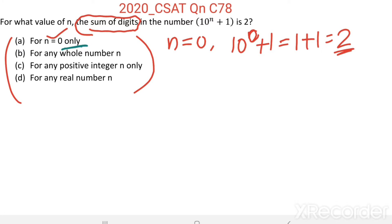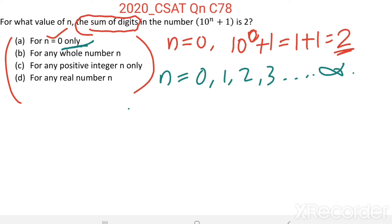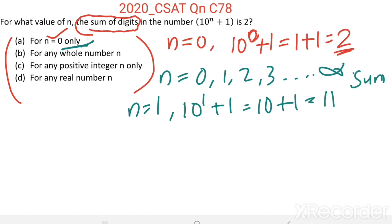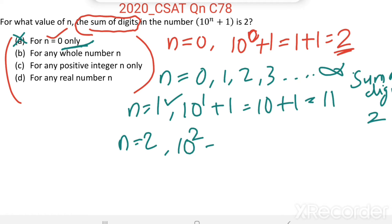Consider the second option: for any whole number n. Whole numbers are 0, 1, 2, 3 up to infinity. When n equals 0, the condition is satisfied. When n equals 1, 10 power 1 plus 1 equals 11, and the sum of digits equals 1 plus 1 equals 2. So for n equal to 1 it is also true. Therefore, n equal to 0 only is false.